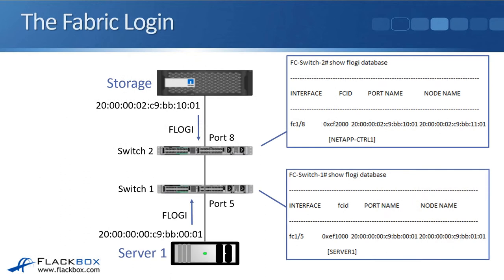Let's see how that works with a diagram. We've got the storage system up at the top, server 1 down at the bottom which is going to use the storage system, and we've got a couple of Fibre Channel switches — switch 1 and switch 2. The storage system comes online, and when it does that, the HBA will send a FLOGI, a fabric login request, to its directly attached switch, which is switch 2. That includes the WWPN. So switch 2 sees that WWPN, which is plugged into a particular port, is sending a fabric login request. It will then assign an FCID, and the FCID is based on the switch's domain ID and the port that the WWPN is connected to.